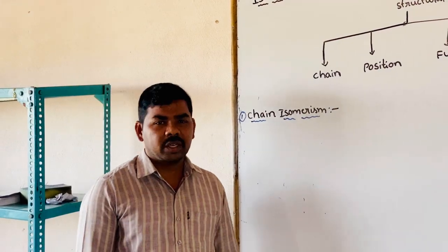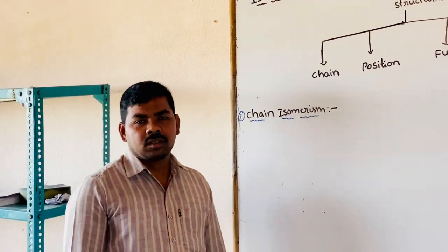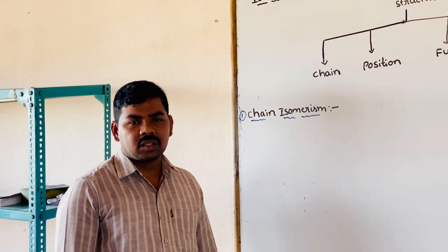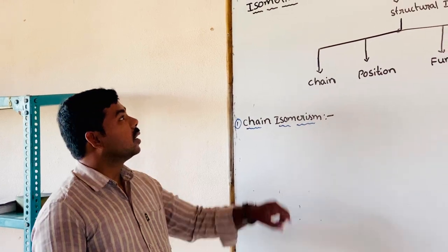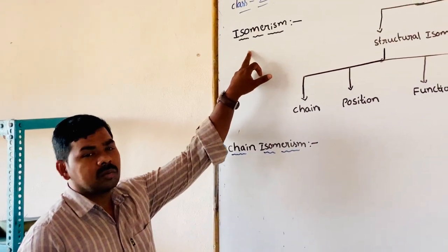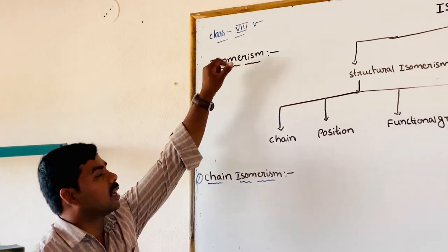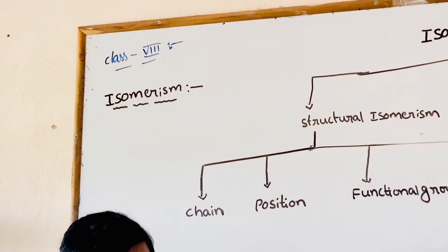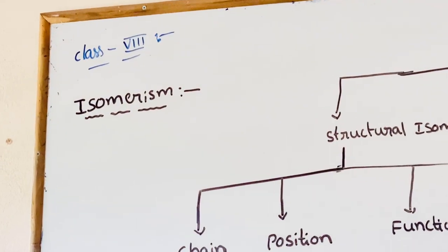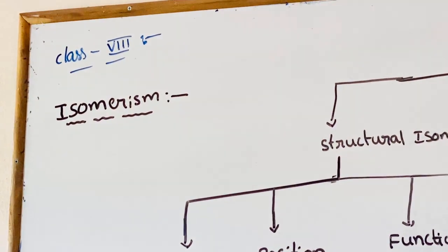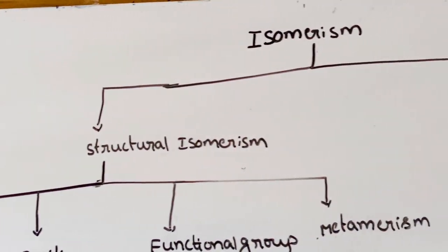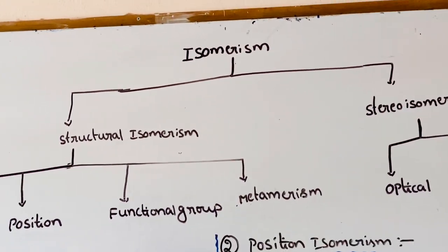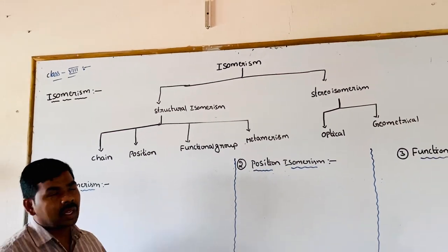Good morning students. My name is P. Harman Kreti. Today we discuss about the topic isomerism. What is isomerism? Molecular formula is same for two or more compounds but different physical and chemical properties — this is called isomerism.